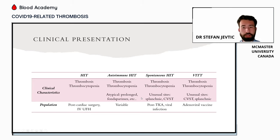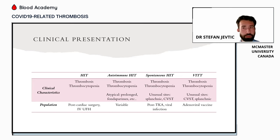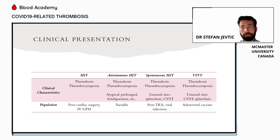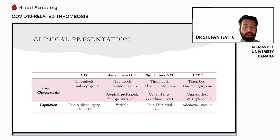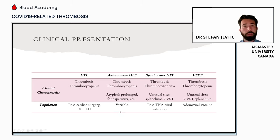These conditions have unique presenting features that help differentiate them. Autoimmune HIT, unlike classic HIT, may have a more prolonged course, may be associated with fondaparinux as opposed to a heparin product, and may have a more severe DIC-type picture. Spontaneous HIT and VITT are unique in that they can present in unusual sites of thrombosis, including splanchnic and CVST. VITT is commonly seen post-adenoviral vaccination, spontaneous HIT is uniquely associated with total knee arthroplasty and orthopedic surgery, and HIT is generally seen post-cardiac surgery or with exposure to unfractionated IV heparin.